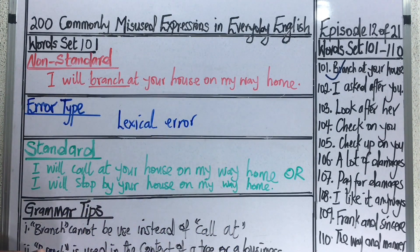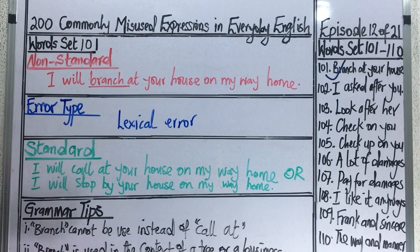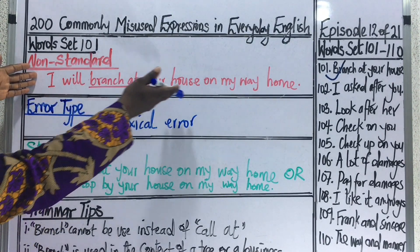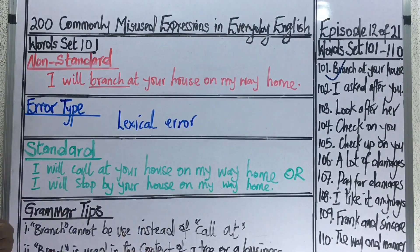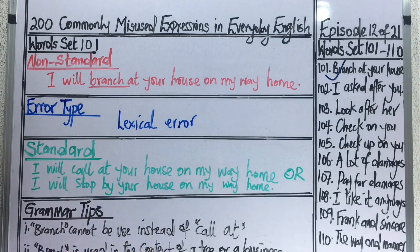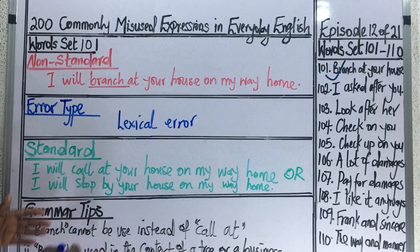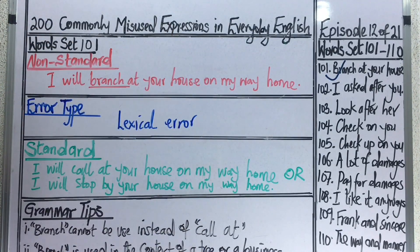We may only use the word 'branch' to refer to a tree, or in the context of a business expanding from one place to another. So instead of saying I will branch at your house on my way home, you would say I will call at your house on my way home, or I will stop by your house on my way home.